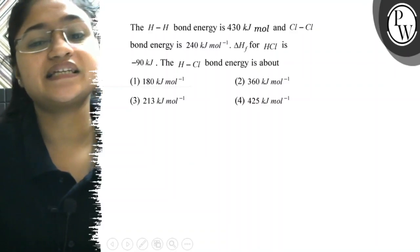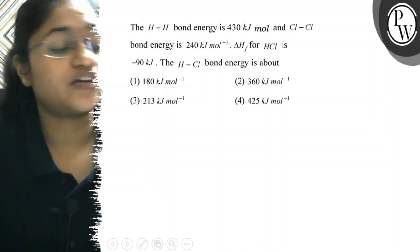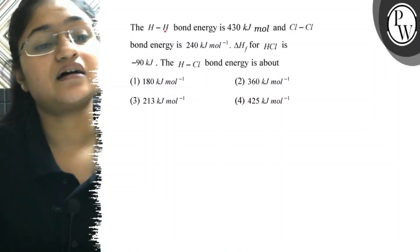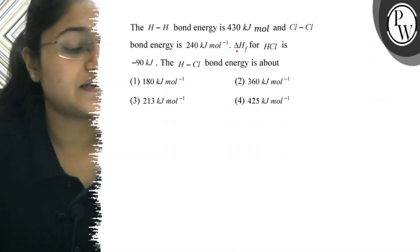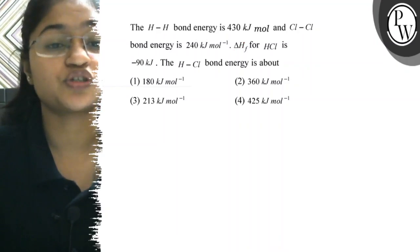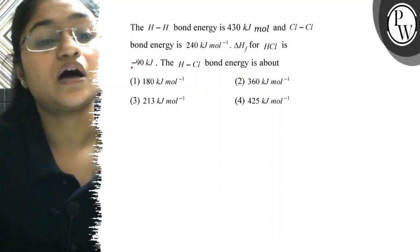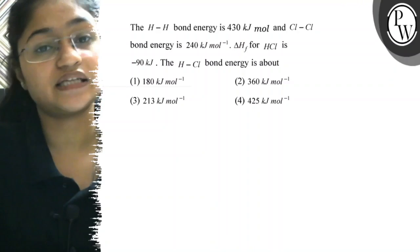Hello guys, let's see this question. The question says the bond energy of H-H and Cl-Cl are given and enthalpy of formation has been given for HCl as minus 90. We need to find bond energy of HCl.